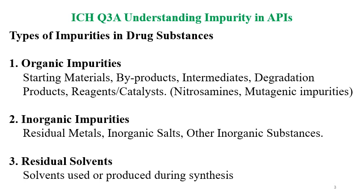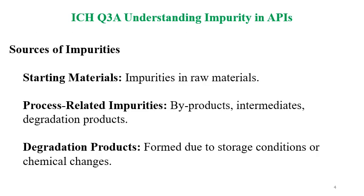Organic impurities may come from starting materials — these may be byproducts, intermediates, degradation products, reagents, and catalysts used in the synthesis of the API. Some impurities may also include nitrosamines and mutagenic-type impurities. Inorganic impurities come from residual metals, inorganic salts, and other inorganic substances. Residual solvents are volatile impurities that come from solvents used or produced during the synthesis.